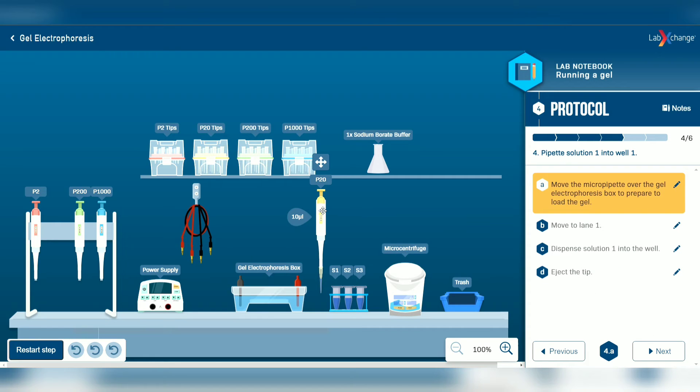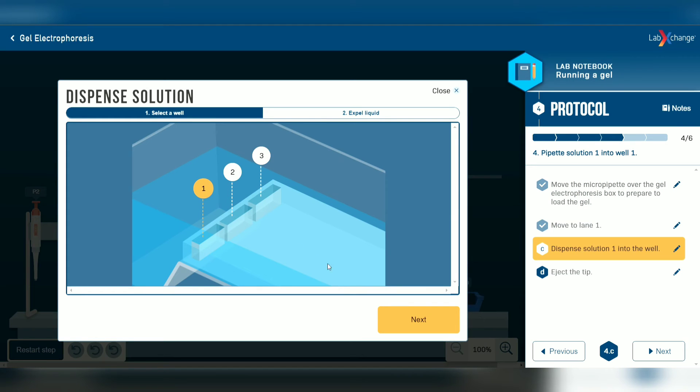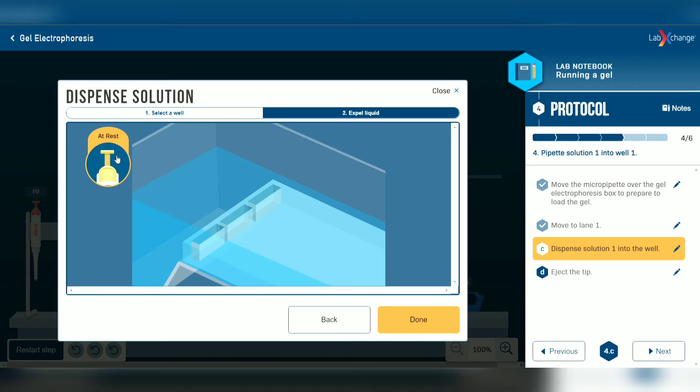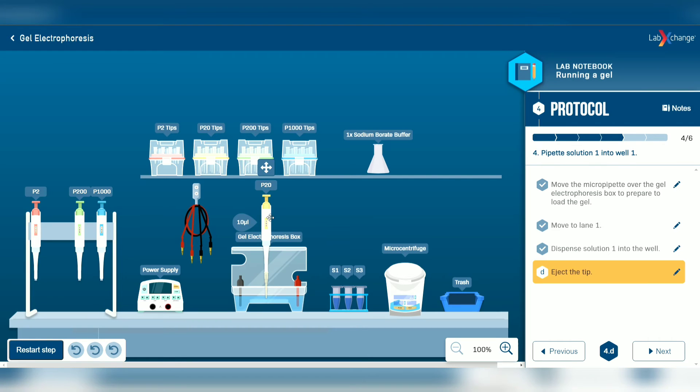And transfer the S1 solution to the agarose gel. So at this step, we only press the micropipette until first stop to prevent spillage to the next well. Then we eject the tip to the trash container.